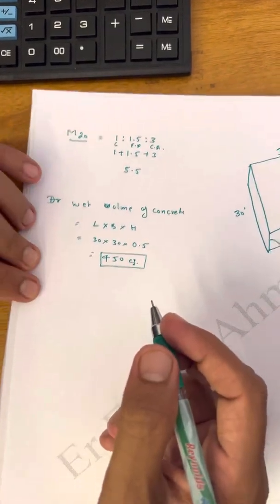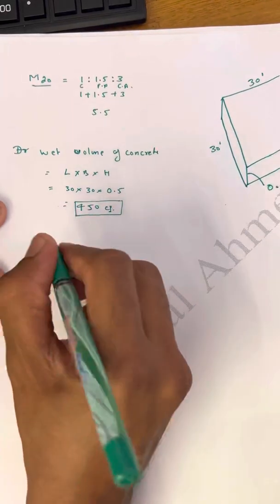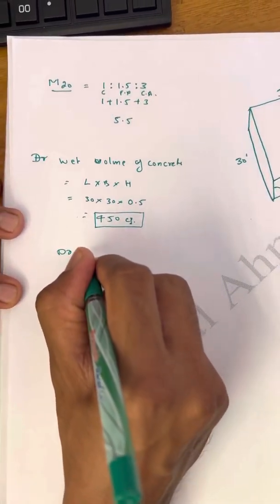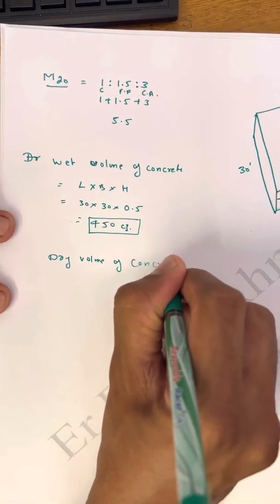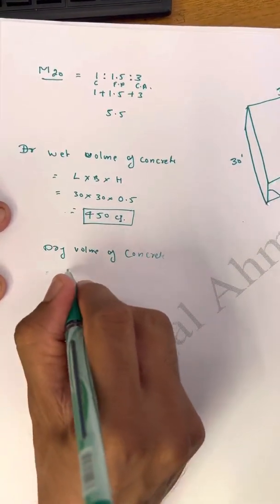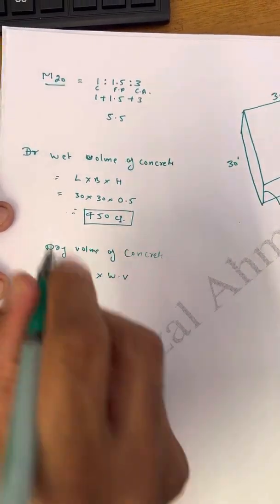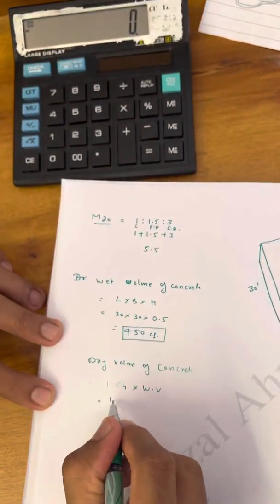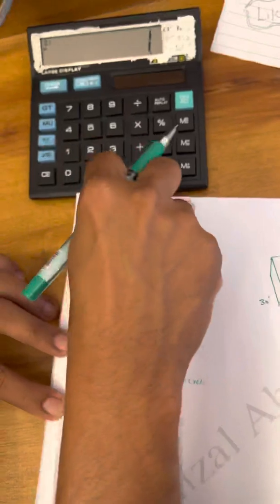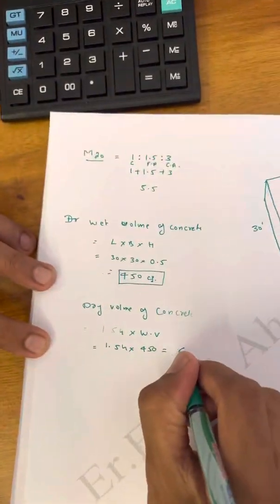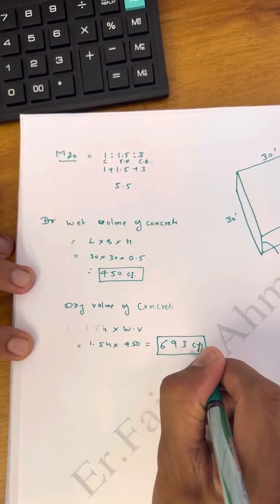We need to convert wet volume into dry volume because our aggregate will be in dry condition. The dry volume of concrete is always 1.54 times the wet volume. So dry volume = 1.54 × 450 = 693 cubic feet.